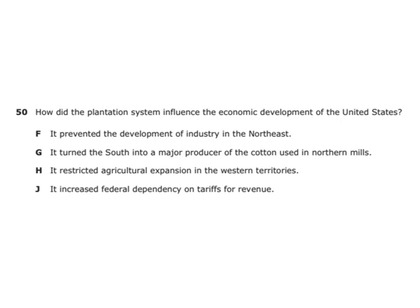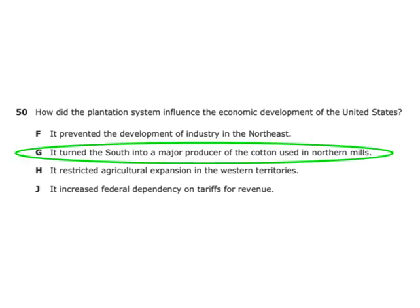How did the plantation system influence the economic development of the United States? It turned the South into a major producer of the cotton used in northern mills. The plantation system was in the South — one of the biggest crops was cotton, and the northern mills took that cotton and produced cloth out of it.